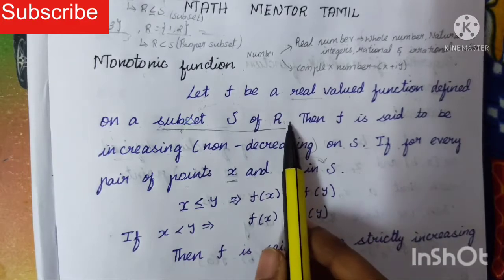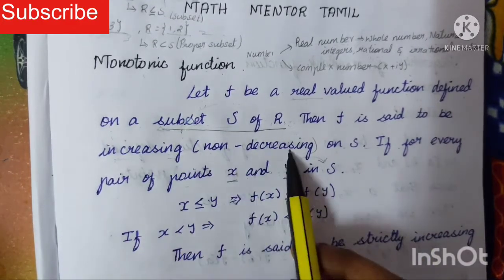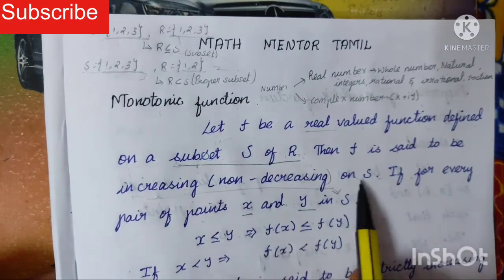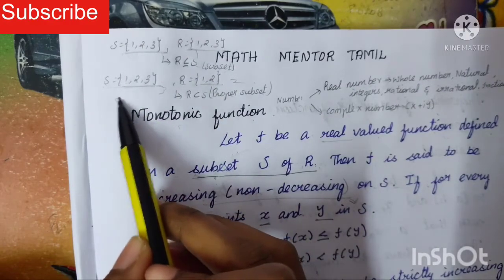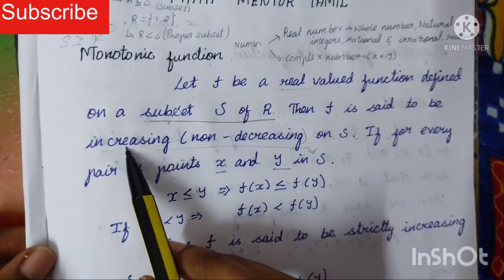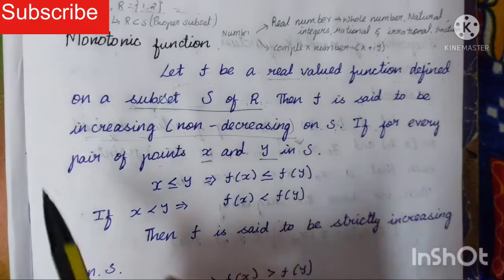Now you get the idea about subset S of R. Then f is said to be increasing or non-decreasing on S. Increasing or non-decreasing on S means here S is greater than R. If for every pair of points x and y in S: